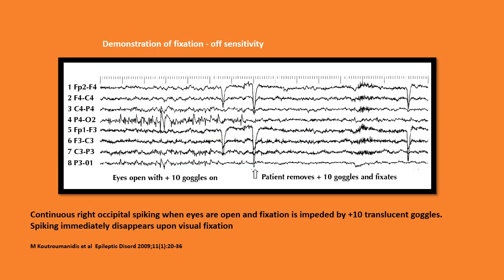This EEG tracing demonstrates the phenomenon of fixation sensitivity: continuous right occipital spiking when eyes are open and fixation is impeded by plus-10 translucent goggles, shown on the left side of the figure. Spiking immediately disappears upon visual fixation.